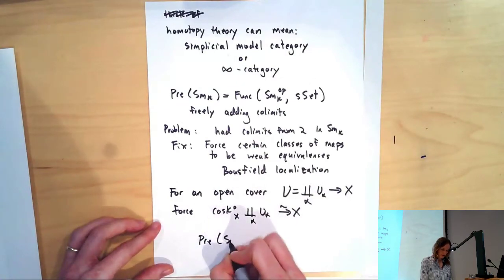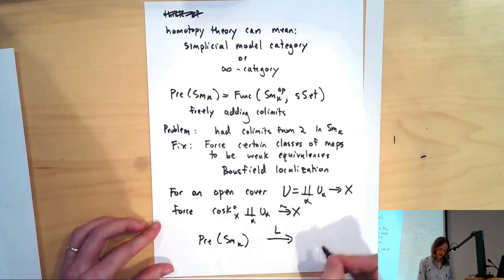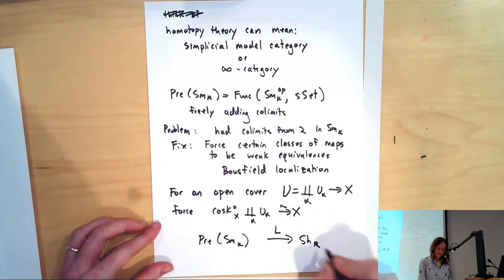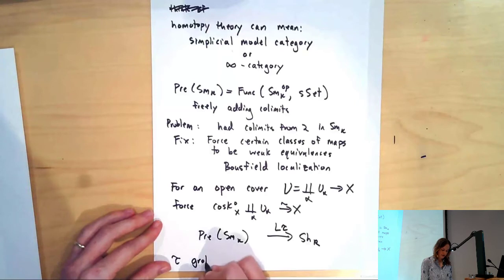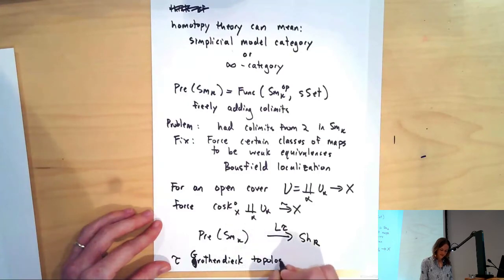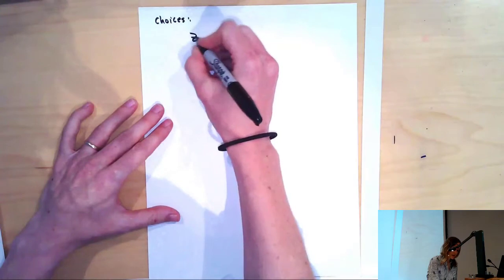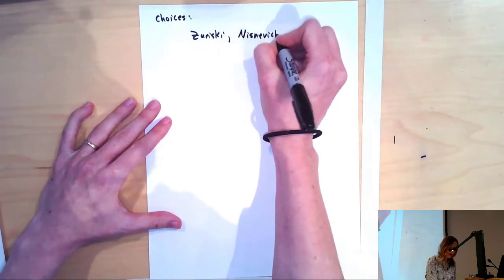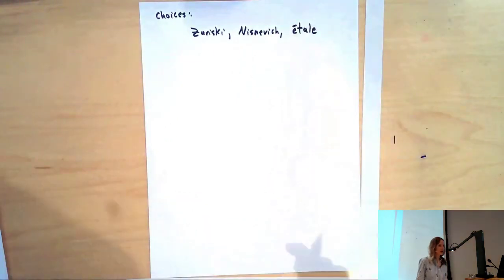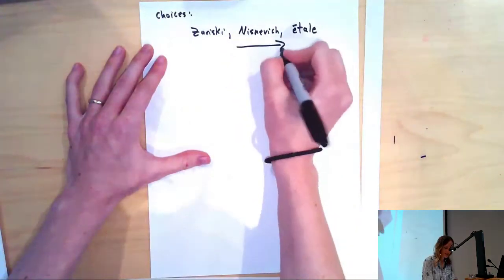With this Bousfield Localization, we get a localization functor sending to a new homotopy theory that we could call sheaves. Let's call this L_τ for τ a Grothendieck topology. That means certain classes of maps are declared to be covers. Our choices: we can have the Zariski topology on schemes, the Nisnevich topology, and the étale topology. There are more open sets going this way.